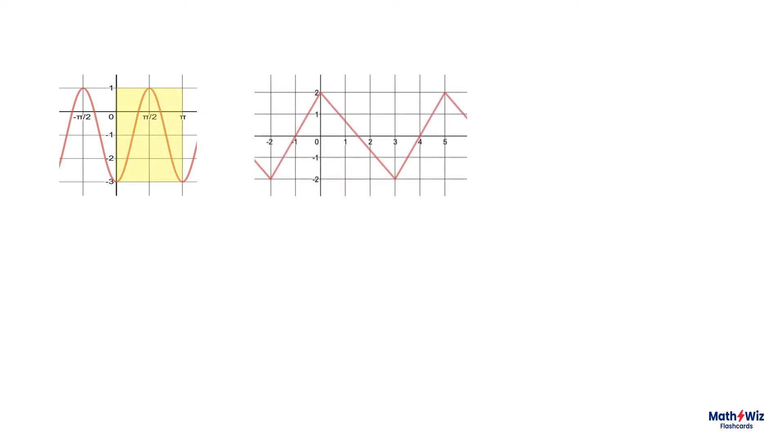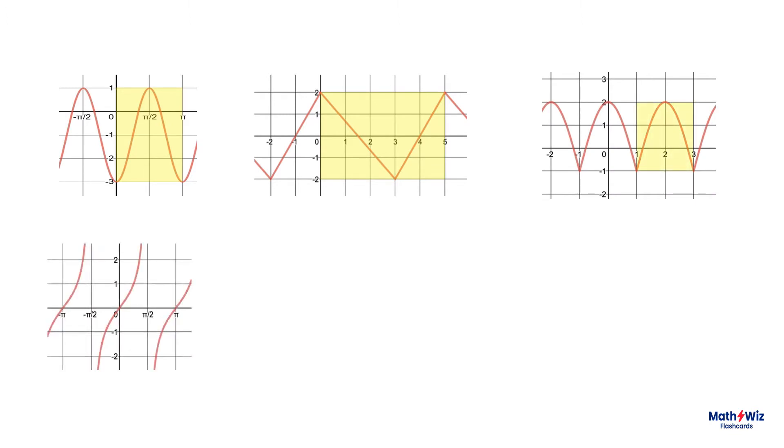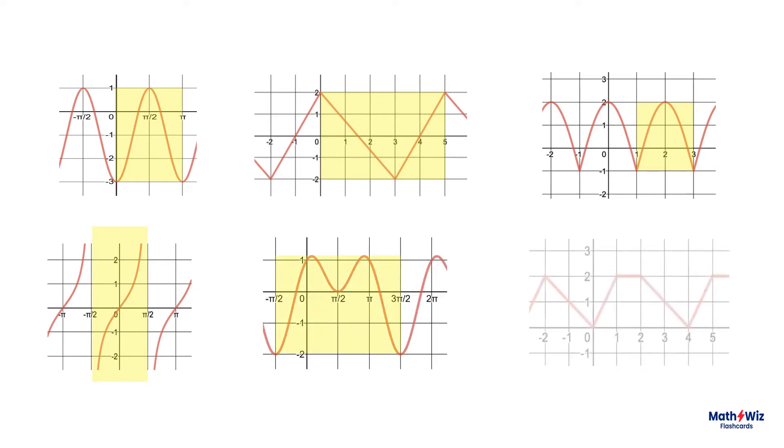In the following graphs, consider the yellow frames. Now, imagine a cookie cutter using each yellow frame, stamping it again and again and again. If we determine the width of a yellow frame, we have calculated the period. It's that simple.